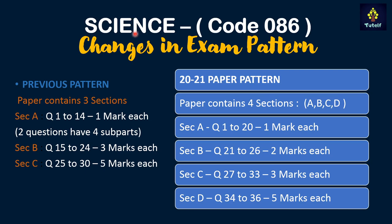The next subject is Science with code 086. Previously the paper used to contain three sections: Section A, Section B, and Section C. In Section A there were questions 1 to 14 of one mark each, in which two questions had subparts.